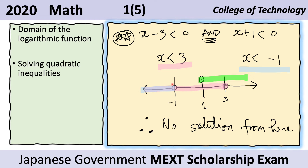However, from the domain of the logarithmic function, the solution must satisfy x greater than one, shown as the green region. All three conditions — x greater than one, x less than three, and x less than negative one — must be satisfied simultaneously. But there is no intersection of these three conditions, so there is no solution for the double star case.